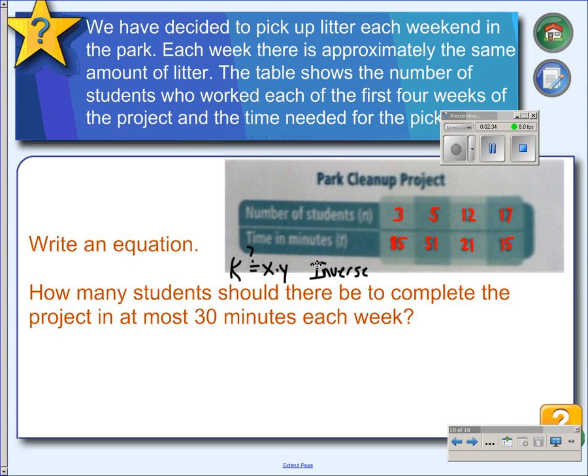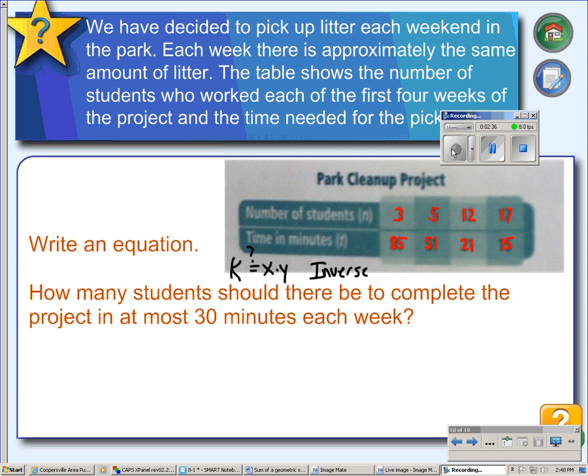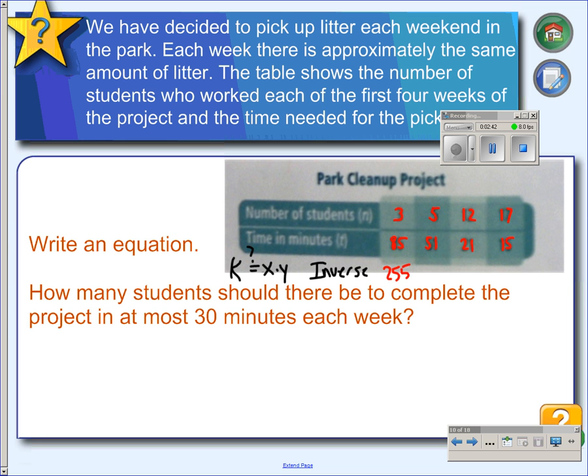So, I'm going to multiply these. When we multiply 3 times 85, we get 255. 5 times 51 is 255. 12 times 21 is 252, and 17 times 15 is 255.